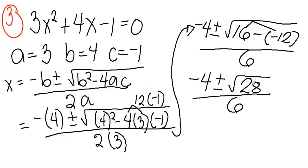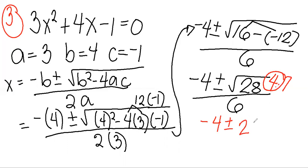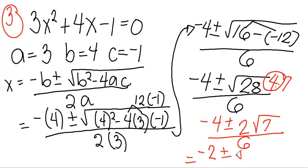Since 28 is not a perfect square, we simplify the radical. 28 equals 4 times 7, and the square root of 4 is 2. So we have negative 4 plus or minus 2 root 7, all over 6. Since 4, 2, and 6 are all divisible by 2, we divide all coefficients by 2: negative 4 divided by 2 is negative 2, 2 divided by 2 is 1, and 6 divided by 2 is 3. So the simplified form is negative 2 plus or minus root 7, all over 3.